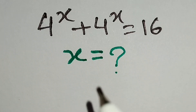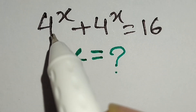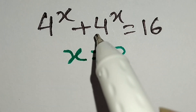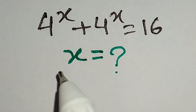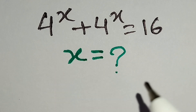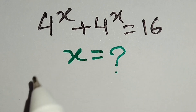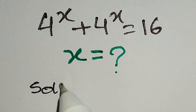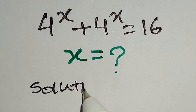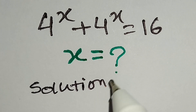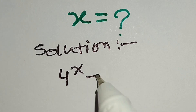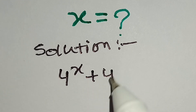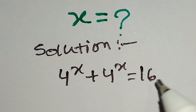Hello, this is a nice math problem. 4 to the power x plus 4 to the power x is equal to 16, and we have to find the value of x. So let's start the solution. The given equation is 4 to the power x plus 4 to the power x is equal to 16.